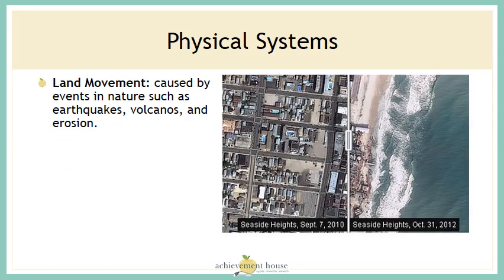Looking at physical systems is the last concept in the movement theme. Physical systems is our earth and our geography — land movement caused by events in nature such as earthquakes, volcanoes, and erosion. Take a look at this before and after picture. This is Seaside Heights, New Jersey, before Hurricane Sandy hit the East Coast and after. The before picture on the left shows houses, streets, and neighborhoods. The picture on the right is after Hurricane Sandy and shows how the land form changed with erosion. When the hurricane hit, it wiped out some of those streets and neighborhoods and changed the physical system of our earth forever.